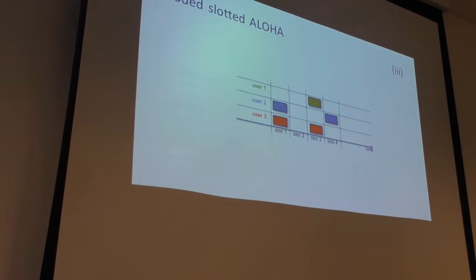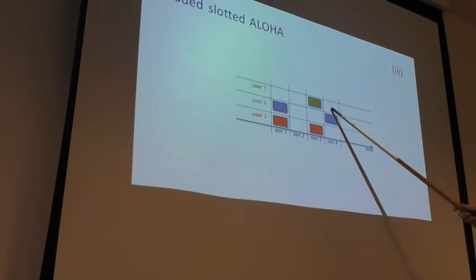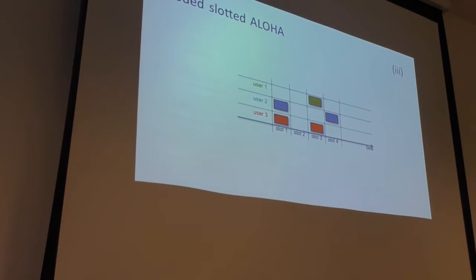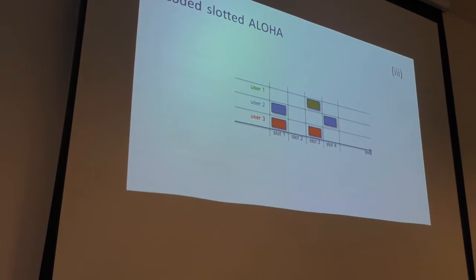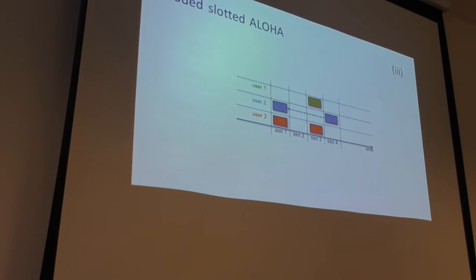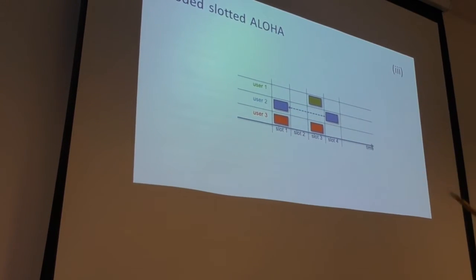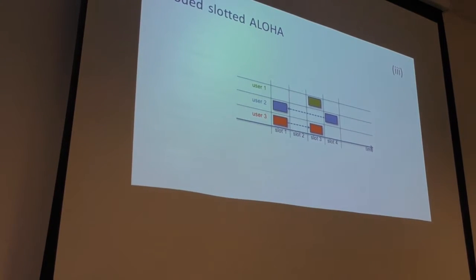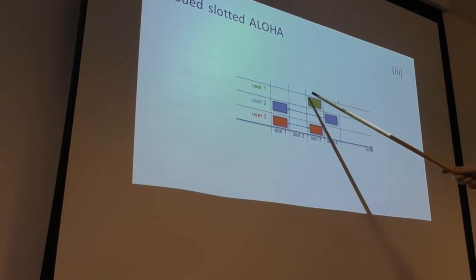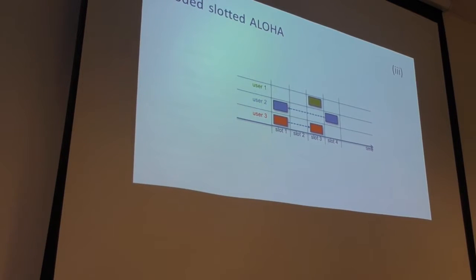A simple artificial example: four slots, three users. In standard slotted aloha, only one slot is useful and the throughput would be one over four. However, in coded slotted aloha, once a replica is decoded in a singleton slot, the base station goes to slot number one — which was buffered — erases the replica, recovers that transmission, learns where the next replica occurred, goes there, erases it, and finally recovers the last user. The throughput becomes three over four — a much better result.